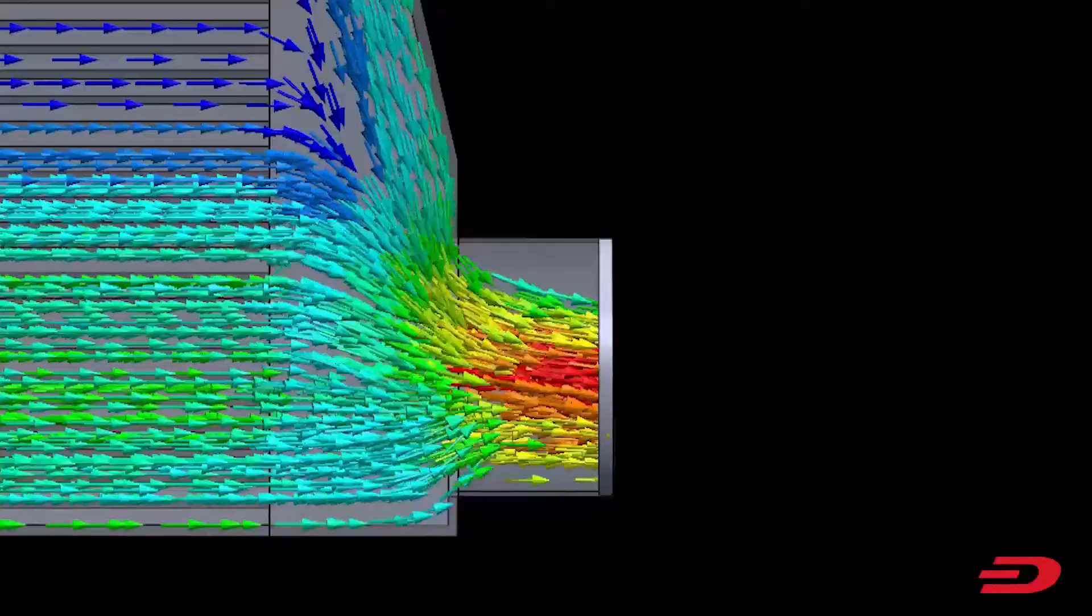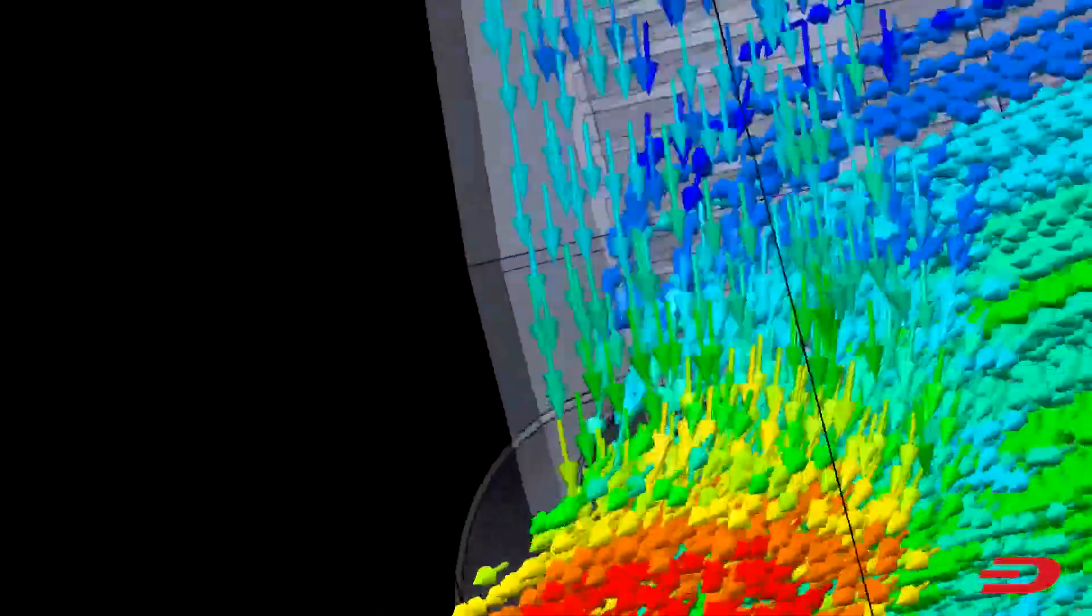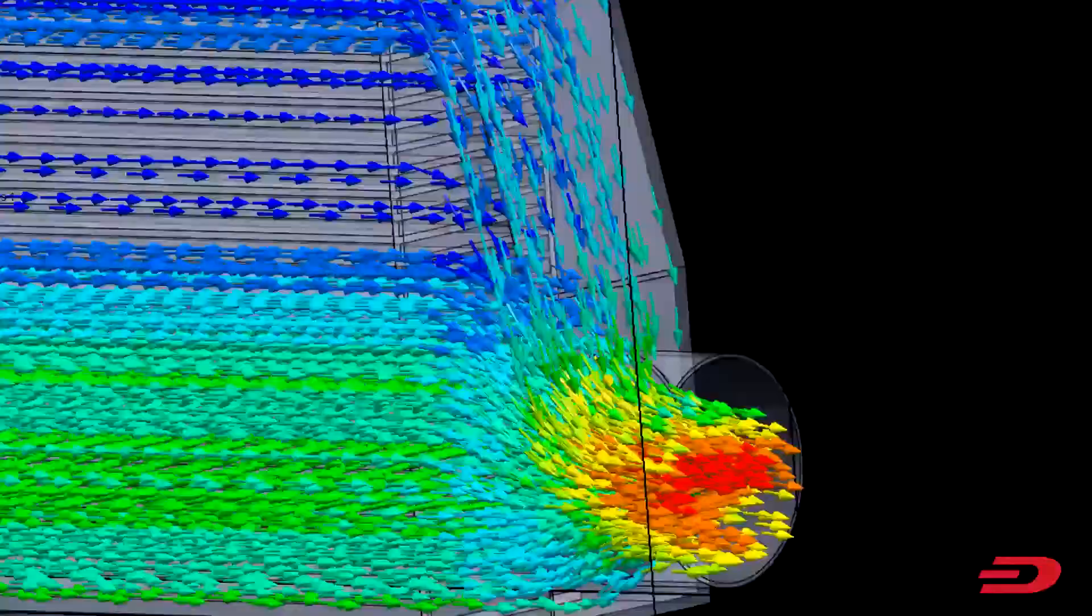However, if we zoom into the end tank, we can see one of the issues of this design. This was also present with the square end tanks. The sharp angles result in the flow of air being restricted.